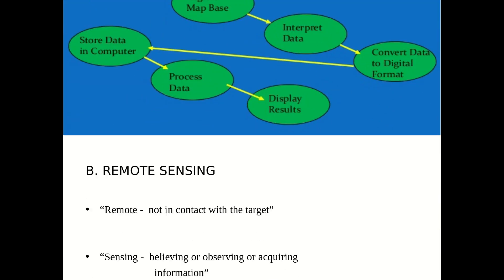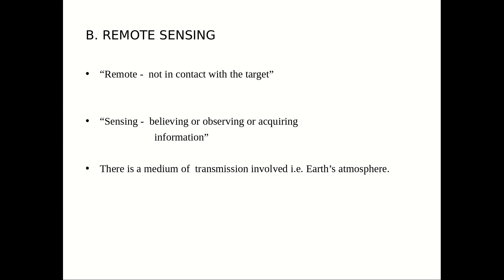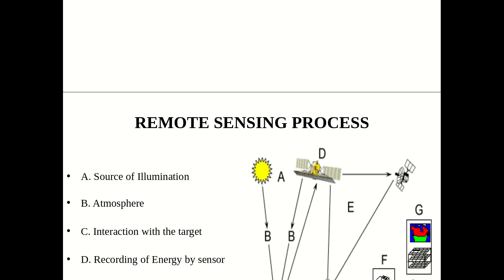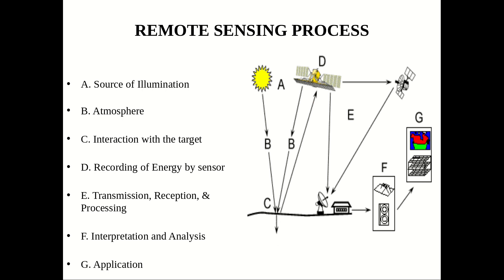Moving to the next slide — Remote Sensing. Remote sensing involves not being in direct contact with the target, but observing or acquiring information about it. The output of a remote sensing system is usually an image representing the scene being observed. As can be seen in the image, nothing is in direct contact with the object, as everything is normally in the form of a digital image.